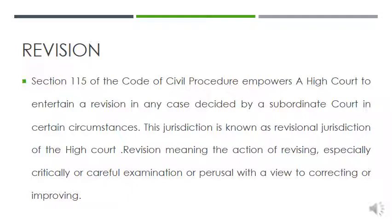Section 115 states that the High Court may call for the record of any case decided by any court subordinate to it in which no appeal lies, if such subordinate court appears: (1) to have exercised a jurisdiction not vested in it by law; (2) to have failed to exercise a jurisdiction so vested; or (3) to have acted in the exercise of its jurisdiction illegally or with material irregularity. These are the three situations under Section 115.